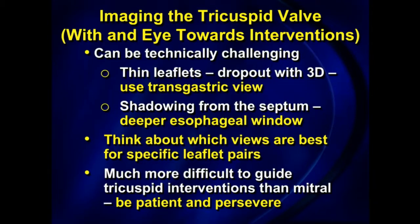Imaging the tricuspid valve with an eye towards interventions can be technically challenging. You have thin leaflets. Use the transgastric view if your 3D is not very good. If you get significant shadowing from the septum, use a deeper esophageal window. Think carefully about which views are best for specific leaflet pairs. It's much more difficult to guide than mitral interventions, but it can be done. You have to be patient and persevere — make sure you're fully caffeinated and have an empty bladder before the procedure starts.